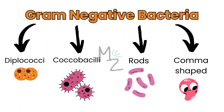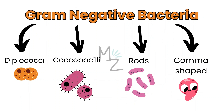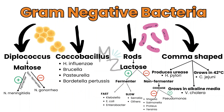But that's not all. Gram-negative bacteria are also classified based on different shapes into diplococci, coccobacilli, rods, and comma-shaped. Diplococci are subdivided based on maltose fermentation — if a bacterium ferments maltose, it's Neisseria meningitidis; if it doesn't, it's Neisseria gonorrhoeae. Coccobacilli includes Haemophilus influenzae, Brucella, Pasteurella, and Bordetella pertussis. Rods are subdivided based on lactose fermentation: fast fermenters are Klebsiella, E. coli, and Enterobacter; slow ones are Serratia and others. Non-fermenters are oxidase positive (Pseudomonas) or negative (Shigella, Salmonella, Proteus, Yersinia). Comma-shaped bacteria: urease producer is H. pylori; grows in alkaline media is Vibrio cholerae; grows at 42°C is Campylobacter jejuni.